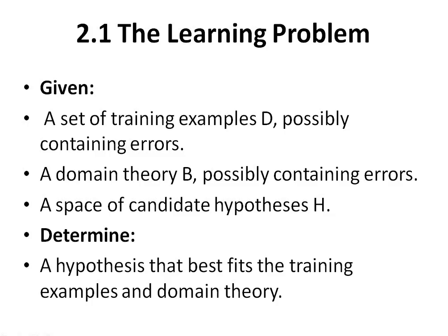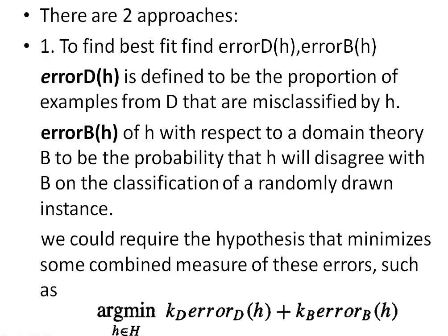To find the best-fit hypothesis, there are two approaches. In the first approach, we need to find Error_D(H) and Error_B(H). Error_D(H) is the proportion of training examples from D that are misclassified by the hypothesis. Error_B(H) is the probability that the hypothesis will disagree with the classification of a randomly chosen instance with respect to the domain theory.